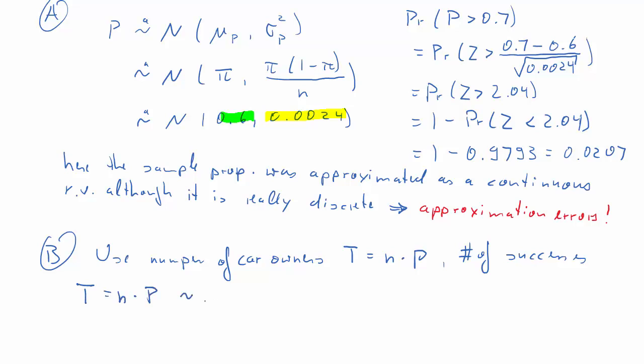So, we are after T, which equals n times P̂, and again, to calculate any probabilities, we need to know the distribution of this.